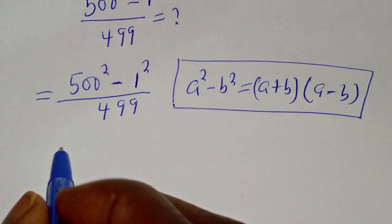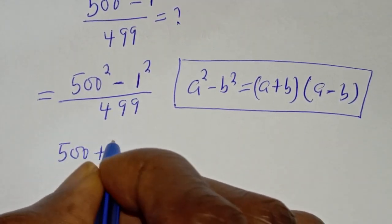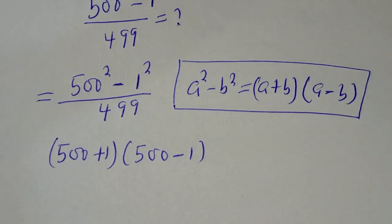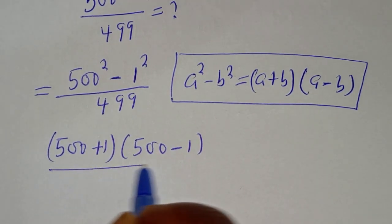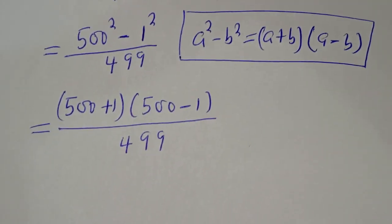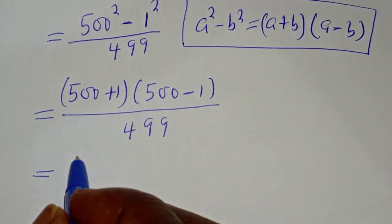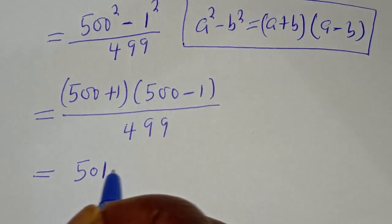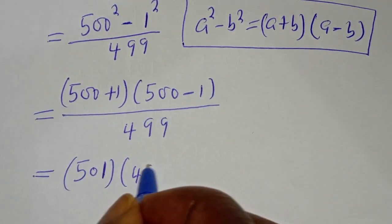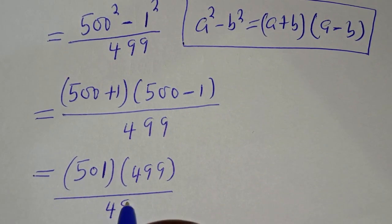Then, this becomes 500 plus 1 multiplied by 500 minus 1, all divided by 499. This is equal to 501 multiplied by 499 over 499.